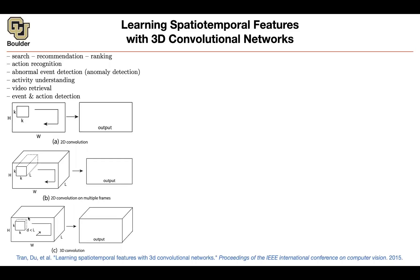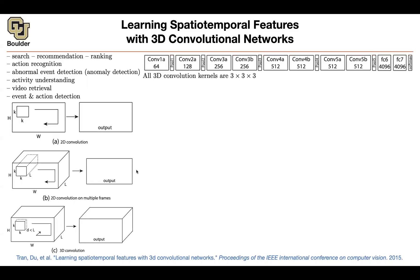This 3D approach has much fewer parameters compared to the 2D approach on multiple frames — assuming the same L, the 2D version has many more parameters. These papers aren't difficult, which is why I'm going through them faster than usual since we have a strong background in convolutions by now. This is the entire macro structure of your 3D convolutional network: convolutions and pooling, convolution, pooling, etc., and fully connected at the end. All convolutions shown are 3 by 3 by 3 — so K is 3, K is 3, and D is 3.